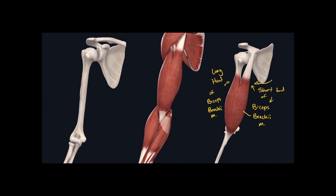Since we have two different heads, we're going to have two different origins, but you can see that they insert in the same place. Starting with the long head of the biceps brachii muscle, the origin is right around here — indicated in red on the left image. The origin for the long head is the neck of the scapula. The origin for the short head is the coracoid process of the scapula.